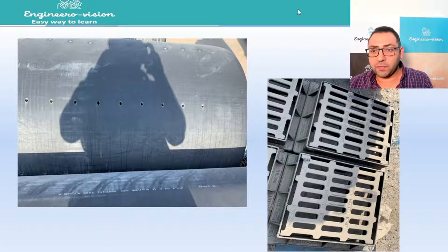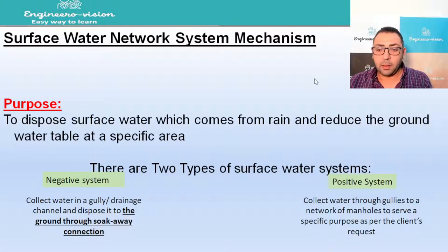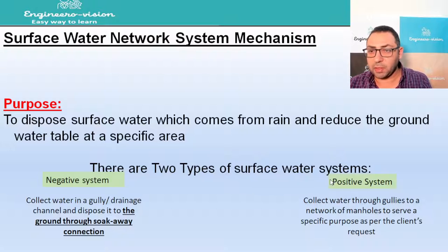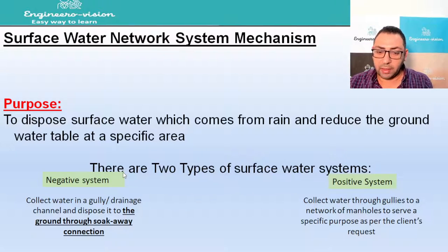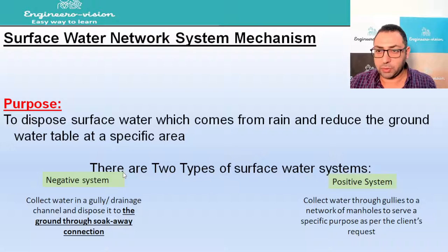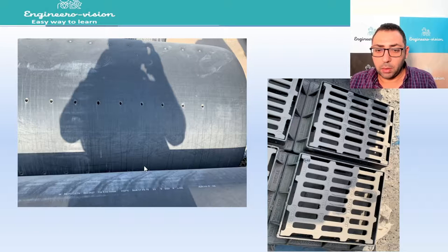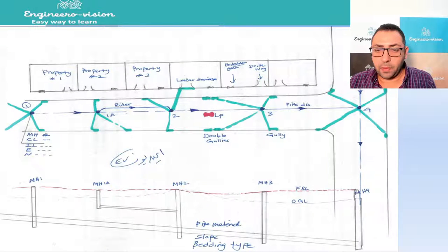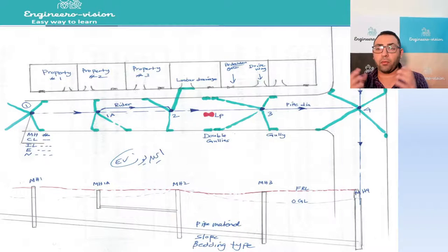So to summarize: the positive system collects water through galleys into a network of manholes to serve a specific purpose as per the client's request. The negative system collects water in a galley drainage channel and disposes of it to the ground through a soak away connection. I've prepared a small sketch so you can understand how this system works for infrastructure.